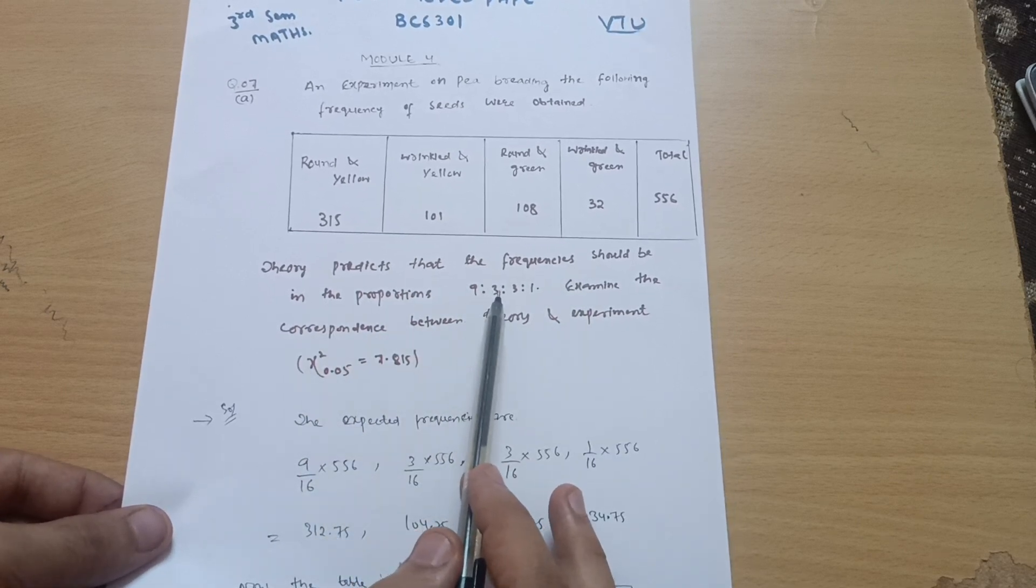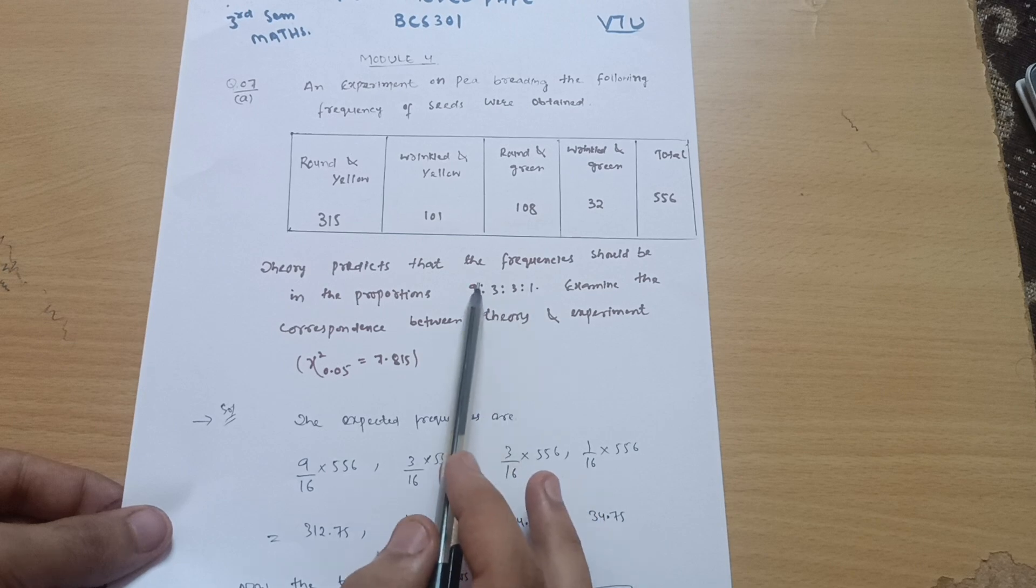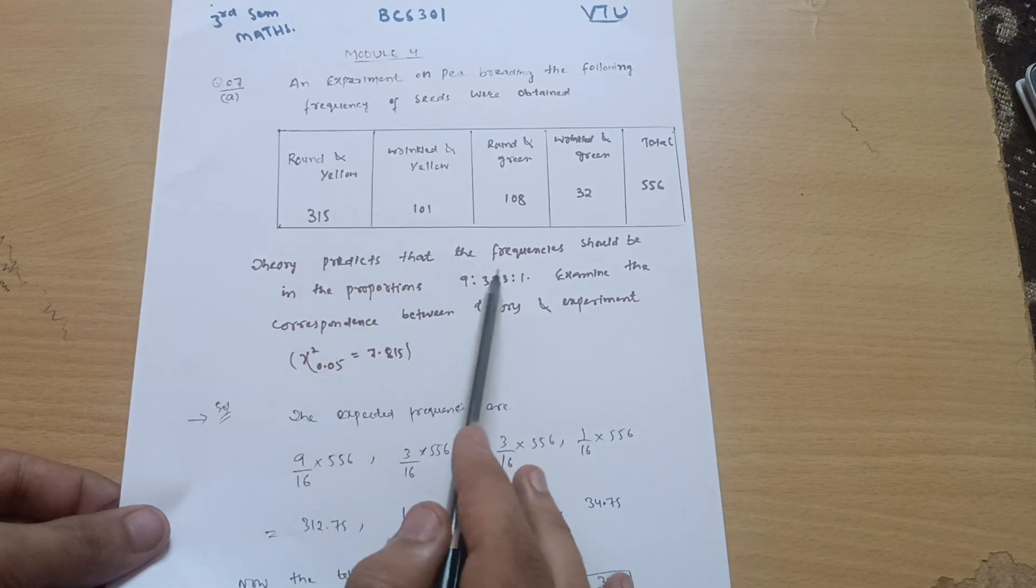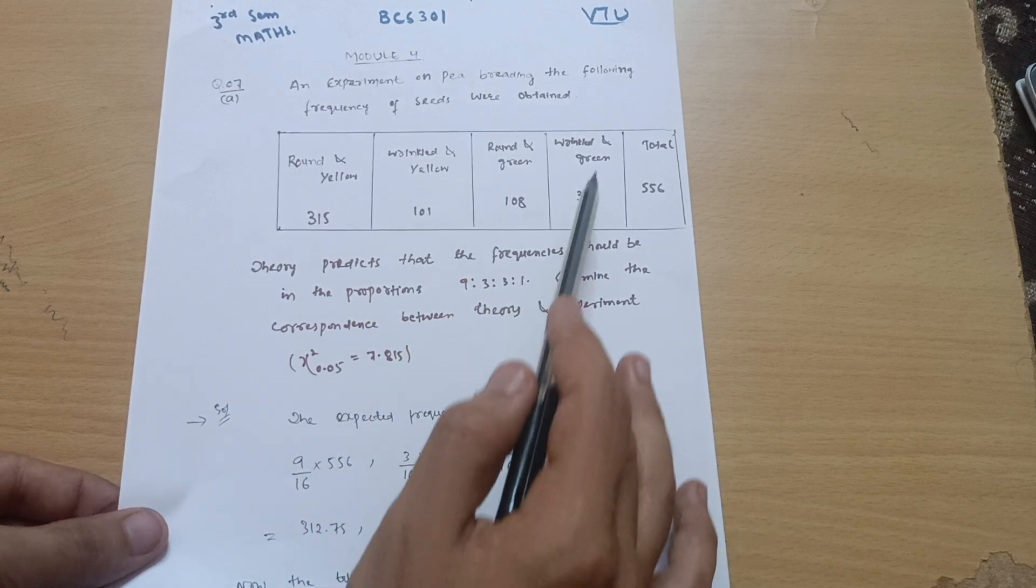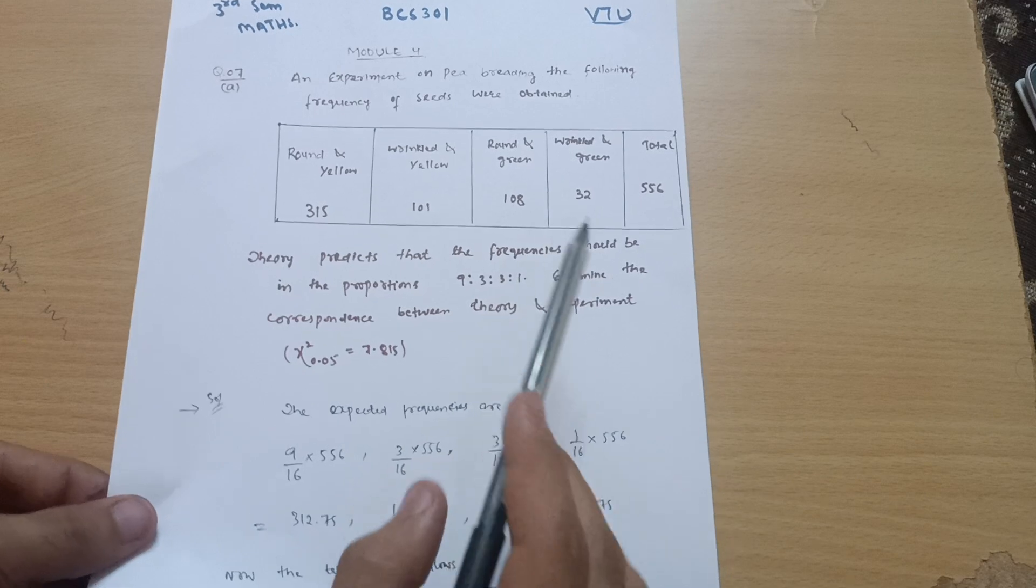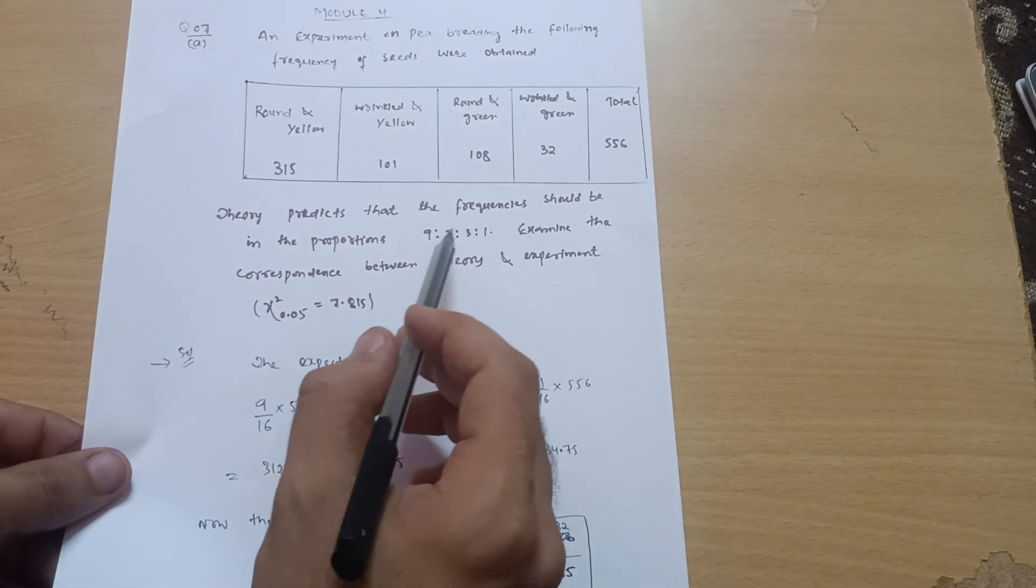See here, the frequency should be in the proportions 9:3:3:1, means 9 is for round and yellow, 3 is for wrinkled and yellow, 3 is for round and green, and 1 is for wrinkled and green. These are the proportions.